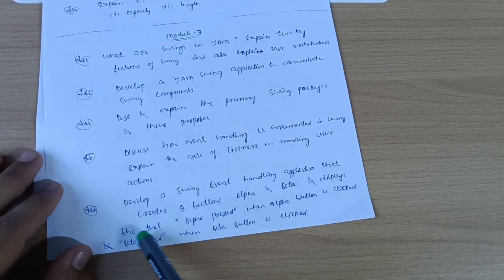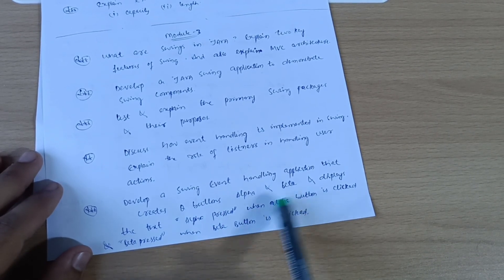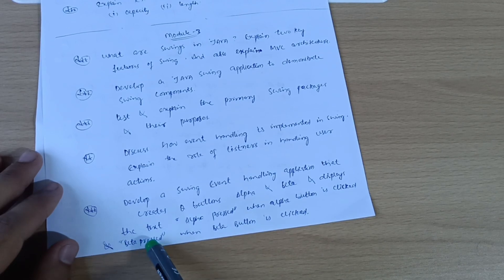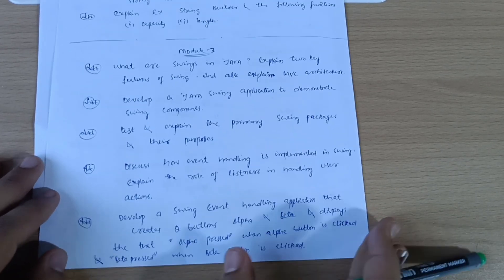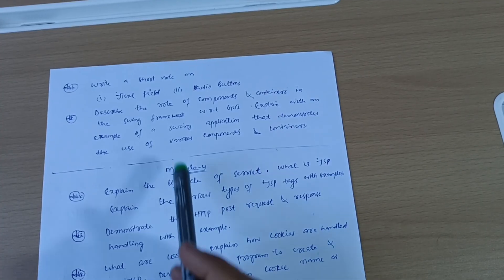Develop a Swing event handling application that creates two buttons, alpha and beta, and displays the text as 'alpha pressed' when alpha button is clicked and next is 'beta pressed' when beta button is clicked.